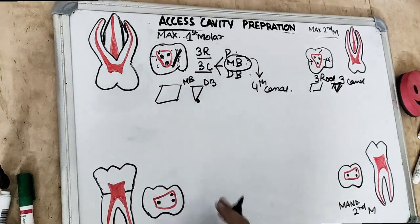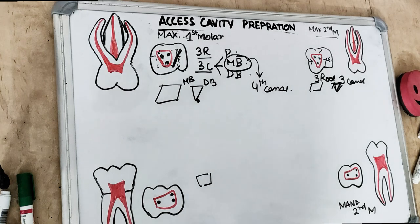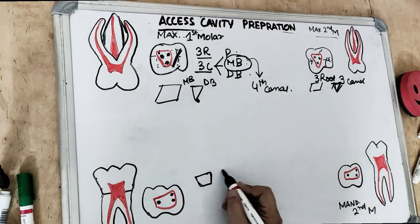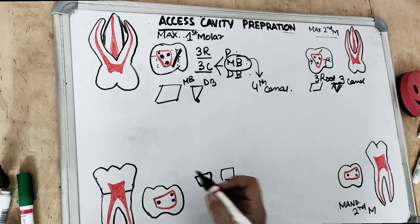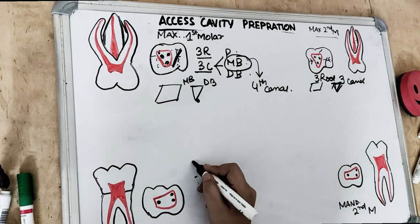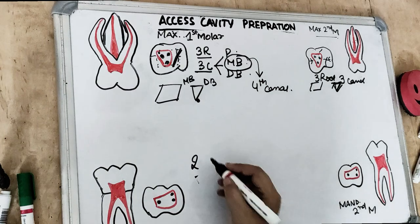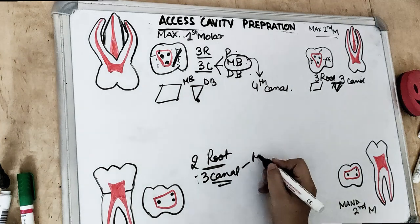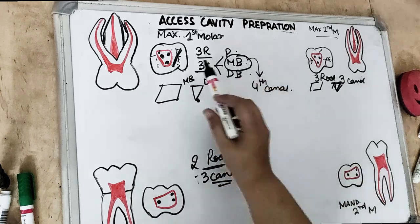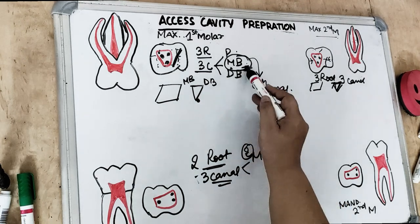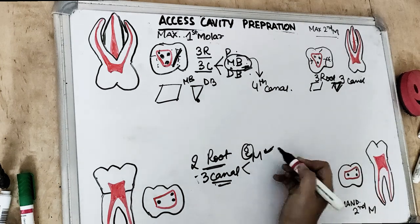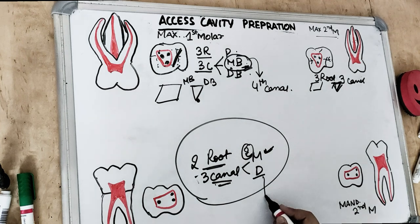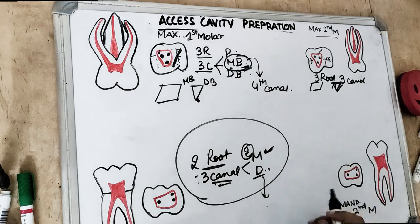The mandibular first molar has a trapezoid access cavity. With three canals normally present — if a fourth canal is present in the distal, the cavity becomes rectangular. It is a rhomboid pulp chamber with four pulp horns and two roots. For molars: maxillary molars have three roots, mandibular molars have two roots. Normally two roots and three canals — two canals in the mesial root and one canal in the distal root.